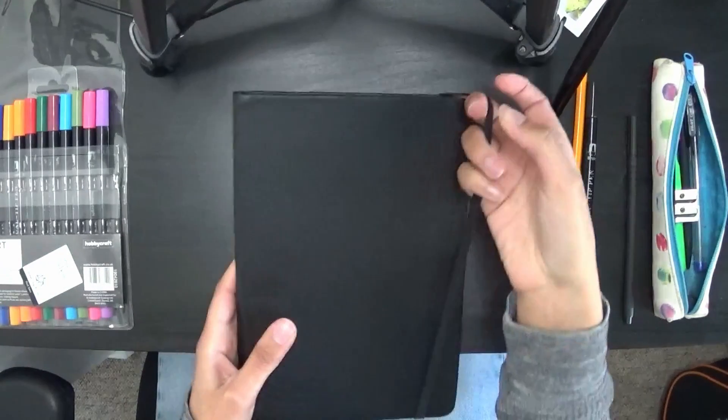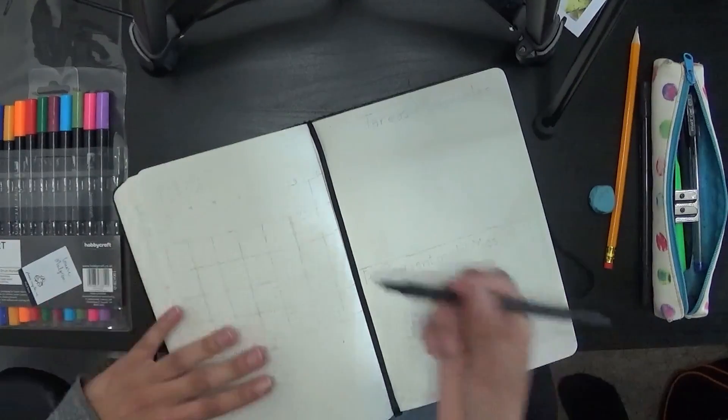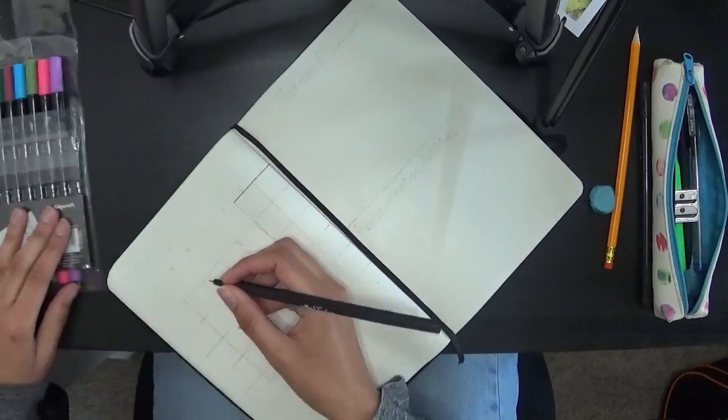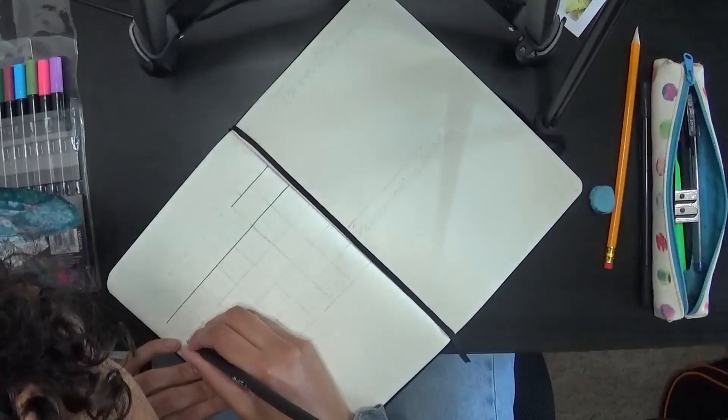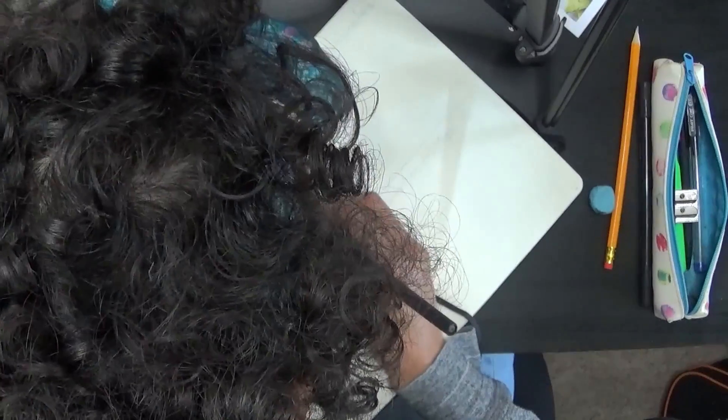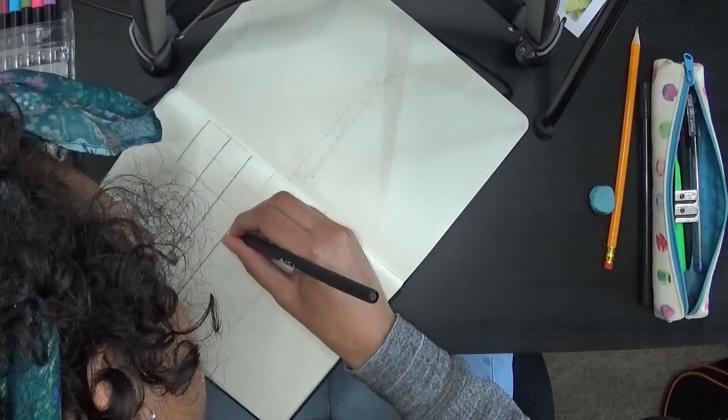Okay, so let's get started with this bullet journal setup for May. The theme that I've chosen for this month is kind of a last-minute change of plans. Originally I was going to do a geometric primary colors really colorful theme.